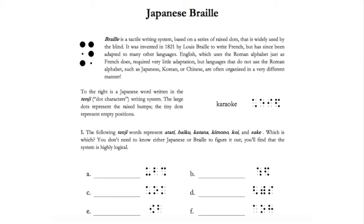First let's talk a little about Japanese braille. Braille is a tactile writing system based on a series of raised dots that is widely used by the blind. It was invented in 1821 by Louis Braille to write French but has since been adapted to many other languages.